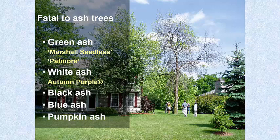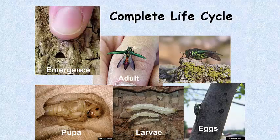All varieties of ash — including the Marshall seedless, Patmore, and Autumn purple — are susceptible, as well as other species in the Fraxinus genus. Emerald ash borer has a complete life cycle: egg, larva, pupa, and adult. When adults emerge, they mate and the female lays eggs in niches in the bark of the ash tree. The eggs hatch into larvae that live under the bark and do the girdling damage, spending the whole summer inside the tree before overwintering as larvae and transforming to the pupal stage and adults the following year.